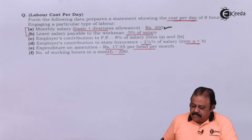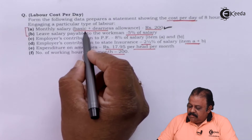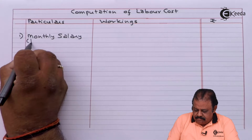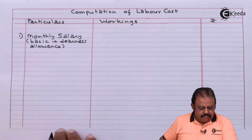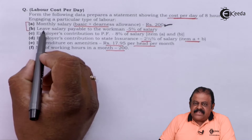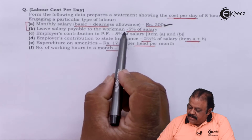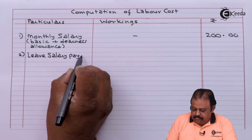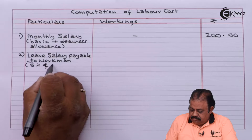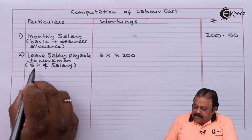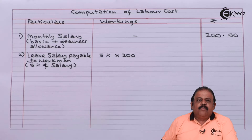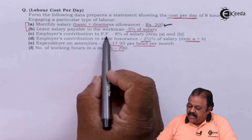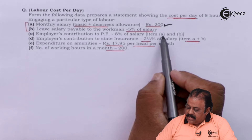Let us add all expenses first. Monthly salary, basic plus dearness allowance: rupees 200. Leave salary payable to workmen is five percent of salary, that is five percent of rupees 200, so it is rupees 10. Employer's contribution to provident fund is eight percent of salary items A and B.